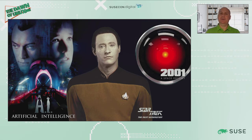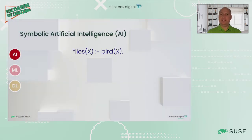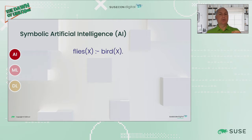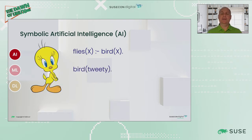AI started earlier than that, though. It has roots in formal logics and mathematics, and so the rules of symbolic artificial intelligence resemble that. Here's a simple example: if something is a bird, we can derive that it flies. And indeed, there is this lovely bird Tweety. Then this little program allows us to infer that Tweety flies.